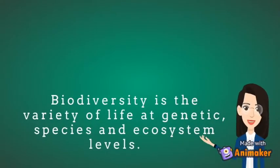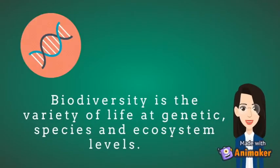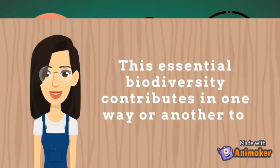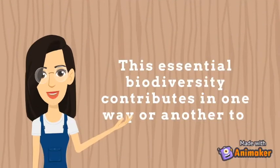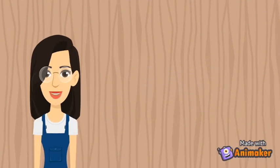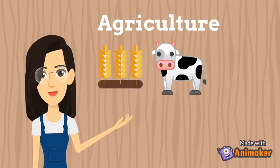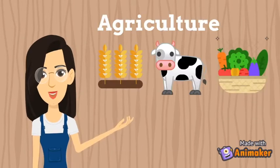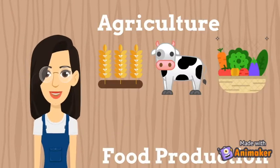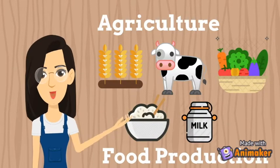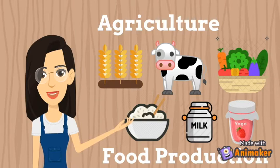Biodiversity is the variety of life at genetic, species and ecosystem levels. This essential biodiversity contributes in one way or another to agriculture such as crops and animals and fruit productions such as rice, milk and jams.